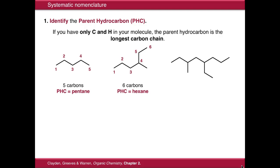In this example over here, we could number it one, two, three, four, but we can see that those carbon chains hanging off the side are even longer. So we could number it up to seven, but actually the longest hydrocarbon chain in this case is eight carbons long. So in this case, our parent hydrocarbon is octane.